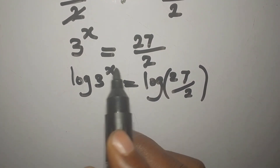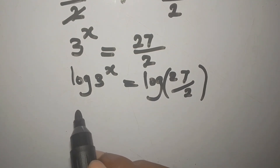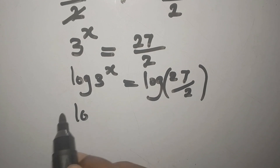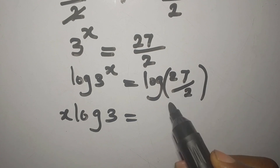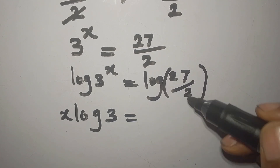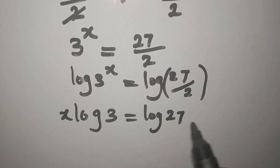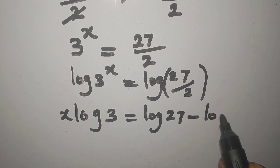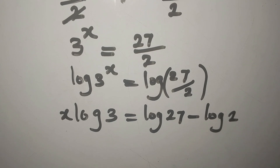This power here can always come down in front, so we will now have x·log 3 equals log(27/2). Here we apply one of the laws of logarithms: if you are dividing inside a log, that means subtraction of logs. So we have log 27 minus log 2, since log(27/2) is the same as log 27 minus log 2.